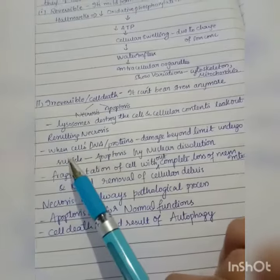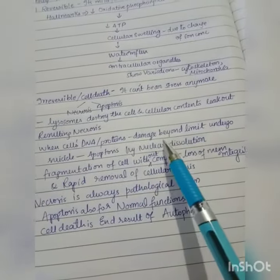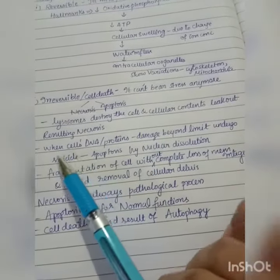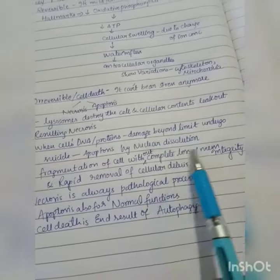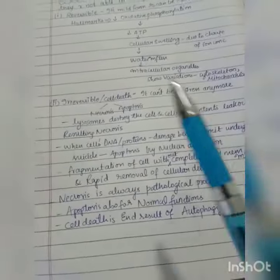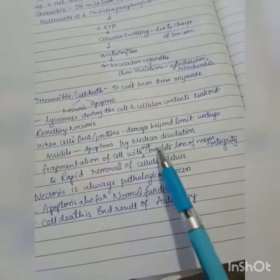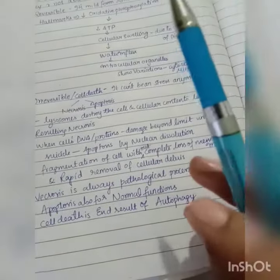When cells' DNA or proteins damage beyond the limit, they undergo suicide, which is apoptosis, by nuclear dissolution. It's the fragmentation of the cell without complete loss of membrane integrity.